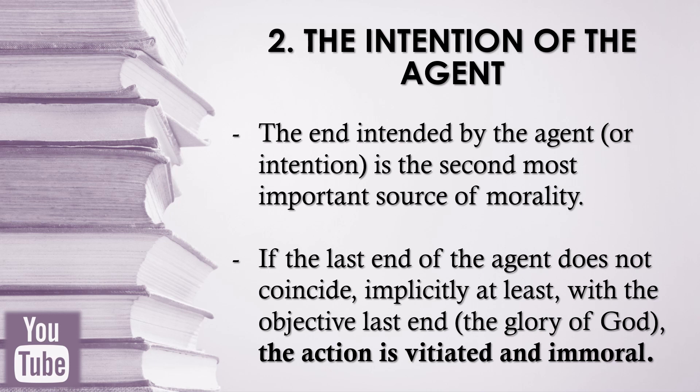Let us now move on to the second determinant of morality: the intention of the agent. The end intended by the agent, or intention, is the second most important source of morality. If the last end of the agent does not coincide, implicitly at least, with the objective last end — which is the glory of God — the action is vitiated and immoral. Every real action is carried out by an agent, and the agent always acts for a last end. Therefore, although their objects may be indifferent, there are no indifferent actions.